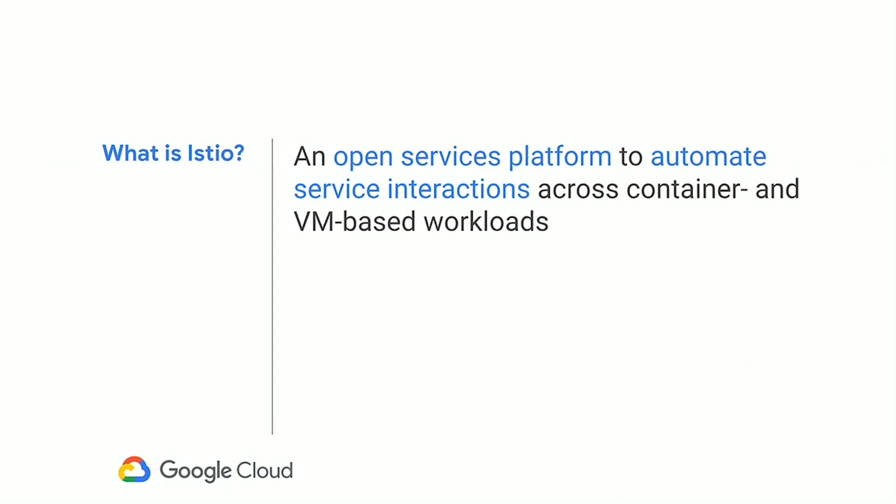I think that definition undersells what Istio really is. I think what Istio actually is, is a platform — it lives on top of Kubernetes and exposes a set of APIs for you to do some very powerful things. Knative, for example, is an amazing open source serverless platform that uses Istio to do really cool stuff with simple serverless functions on Kubernetes. That's just one example of how you can build on top of Istio.